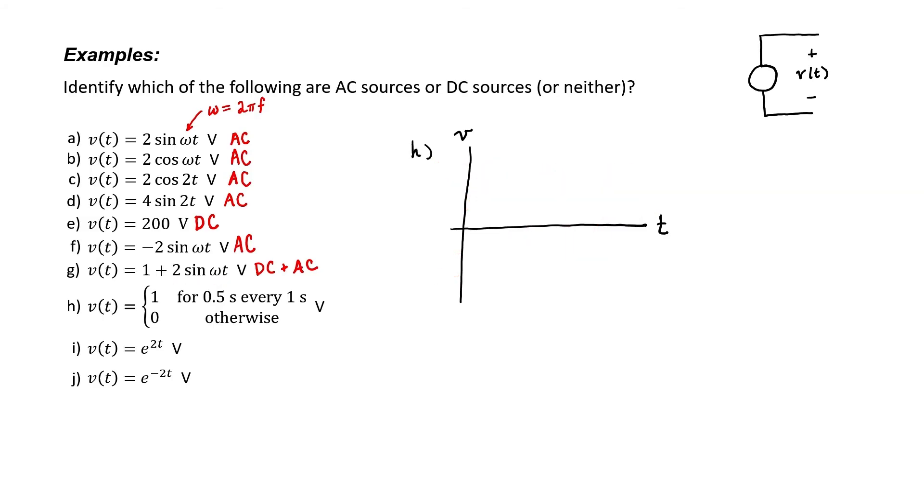What about source H? There's no sine wave. Is it still an AC source or is this something else? The definition of the function here tells us that the voltage is going to be 1 volt for a half second every 1 second, zero otherwise. This is a periodic signal. It repeats. So it definitely has an AC component. But does this source also have a DC component?